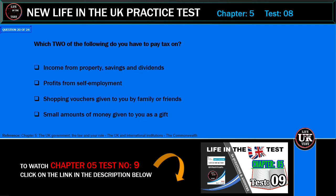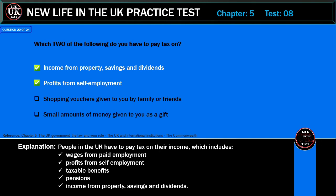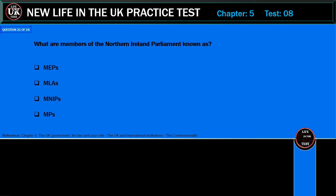Which two of the following do you have to pay tax on? Income from property, savings and dividends; profits from self-employment; shopping vouchers given to you by family or friends; small amounts of money given to you as a gift. Correct answer: income from property, savings and dividends, and profits from self-employment. Explanation: People in the UK have to pay tax on their income, which includes wages from paid employment, profits from self-employment, taxable benefits, pensions, and income from property, savings and dividends.